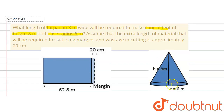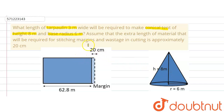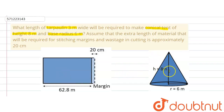In a conical tent the base is always open, so no cloth will be required to make the base. Only the curved portion of the conical tent will be made using this cloth. So the area required of this cloth will be equal to the curved surface area of the conical tent which is to be made, and by using that we are going to find out the length.